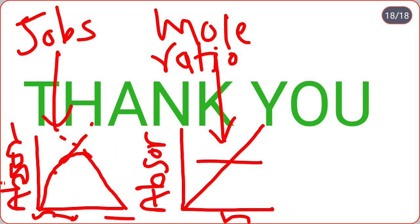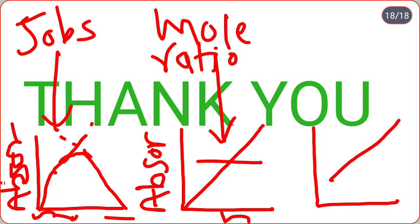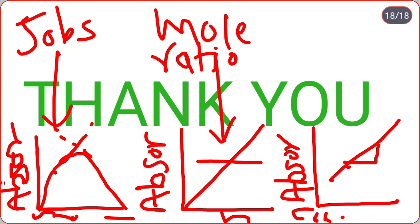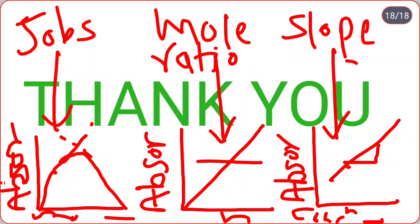For the slope ratio method, the graph has absorbance on the y-axis and concentration of ligand or concentration of metal on the x-axis, giving two slopes.